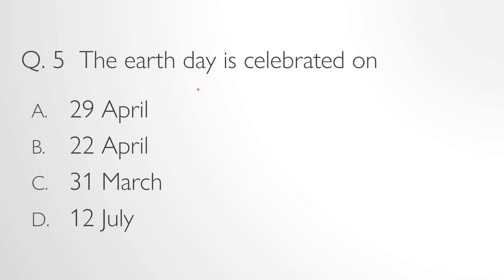The Earth Day is celebrated on blank — 29th April, 22nd April, 31st March, or 12th July? The Earth Day is celebrated on 22nd April. Every year it is celebrated on 22nd April.